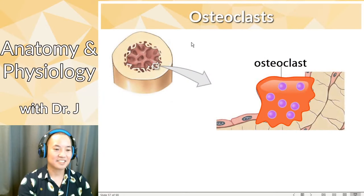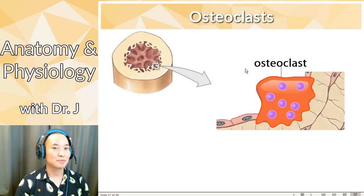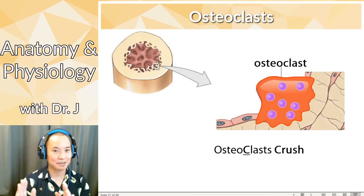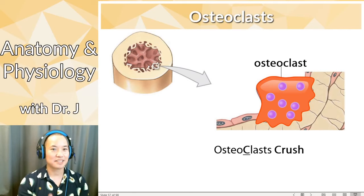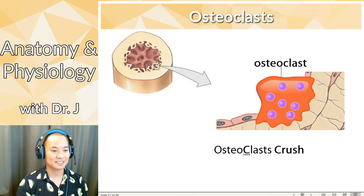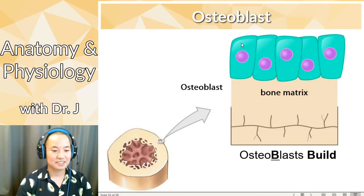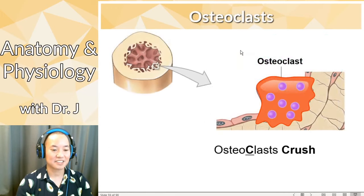So here are the mnemonics: osteoblasts build bone matrix, osteoclasts crush bone matrix. You can't rely on the 'osteo-' part alone since that just means bone for all of them. Osteoblasts build, osteoclasts crush.